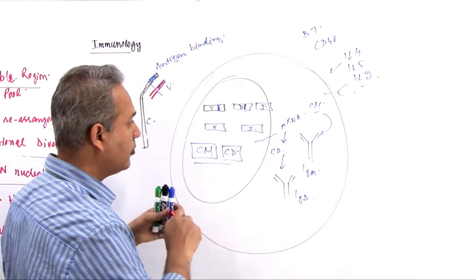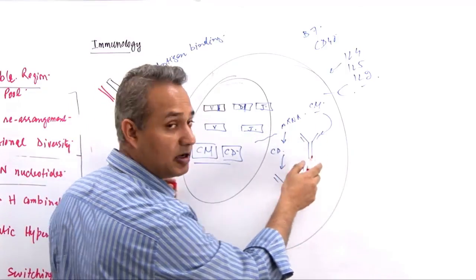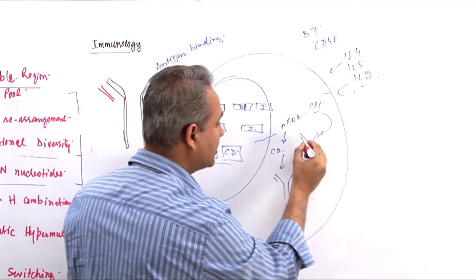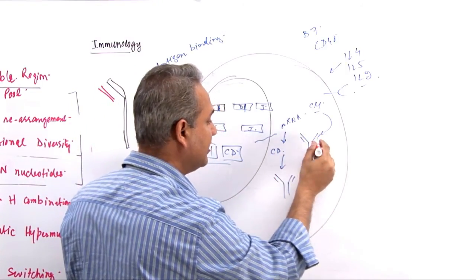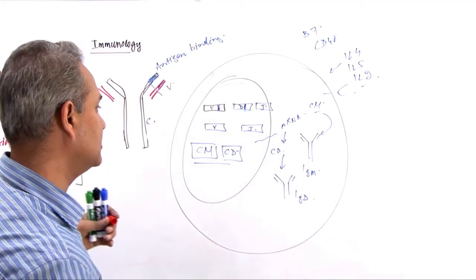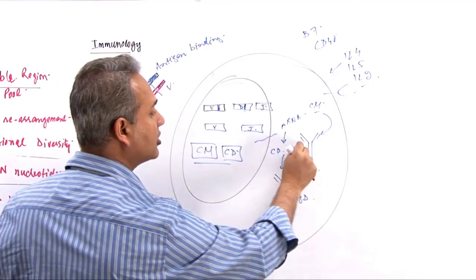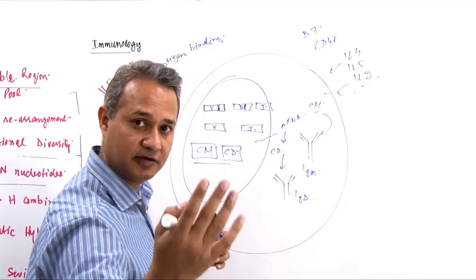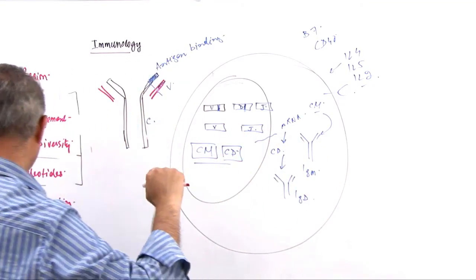Now, one more thing which is important is that when the light chain and heavy chain come out in the cytoplasm, there are combinations of the light chain and heavy chain that occur. So that is also a combinatorial change which occurs, and various B cells would combine with various light chains. The heavy chain and light chain would combine differently.